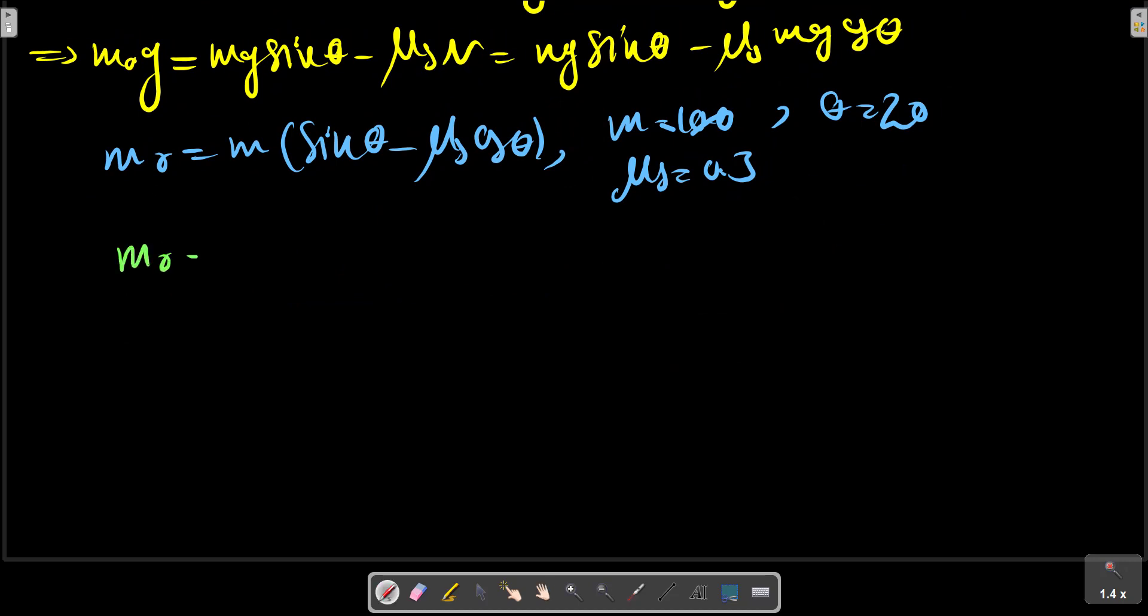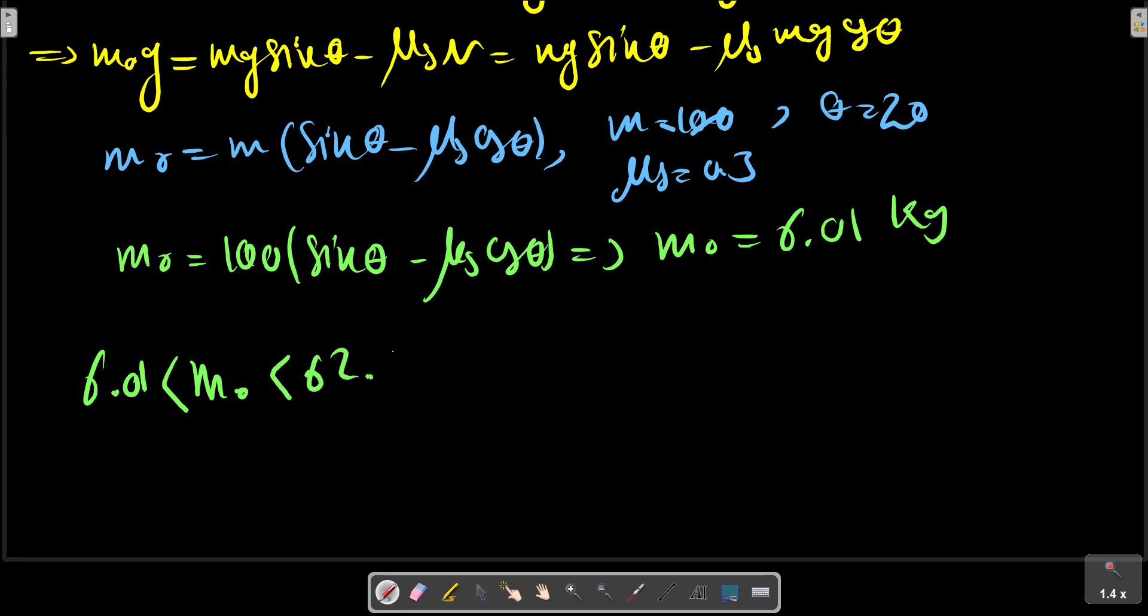So we have the minimum for m0 in the downward impending case. m0 can be between these values and no motion will occur. Thank you.